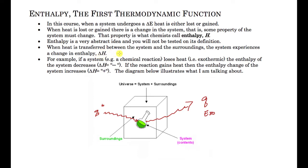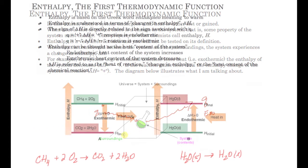The change in enthalpy is enthalpy final minus enthalpy initial, but we're really never going to calculate that directly — we'll focus solely on the change that happens when heat is transferred. When the reaction is exothermic, we see a decrease in enthalpy, giving a negative change. When heat is added, we have a positive change in enthalpy.